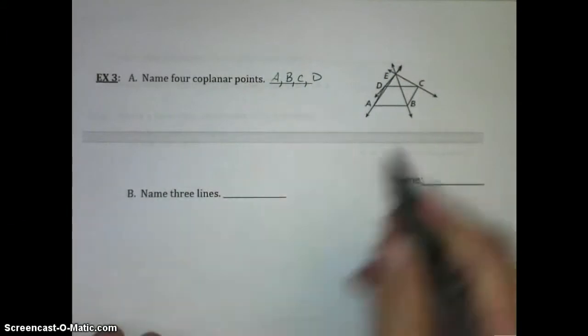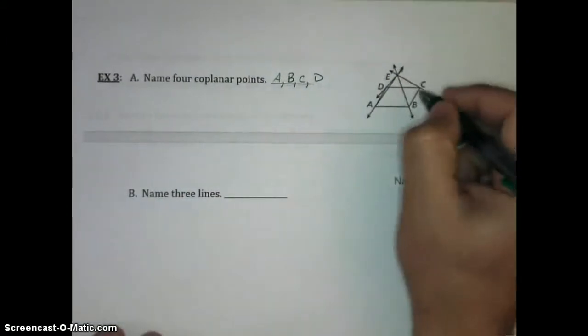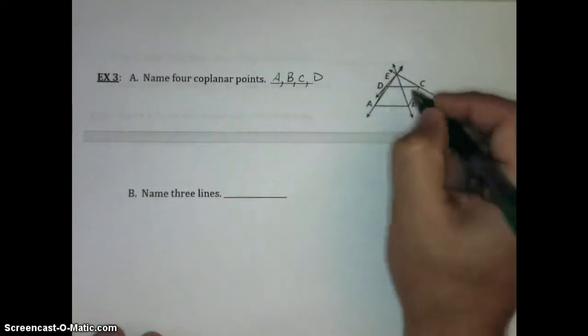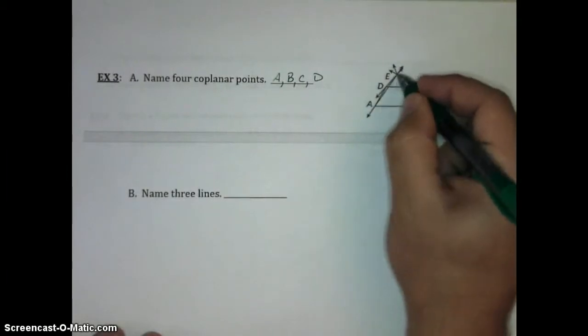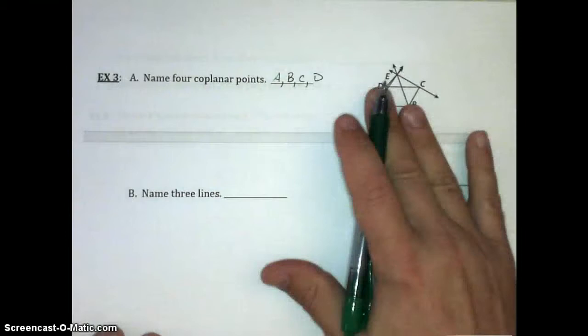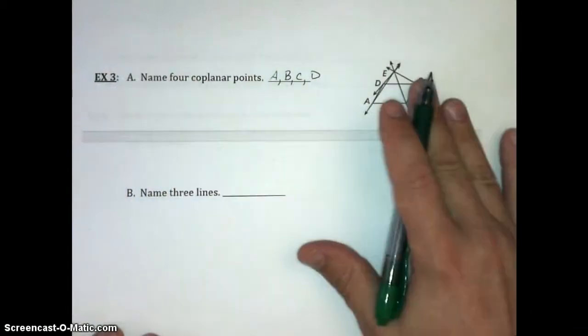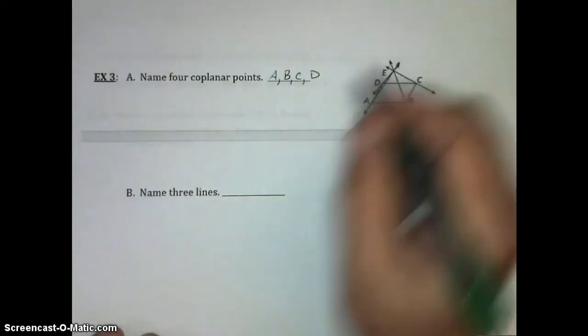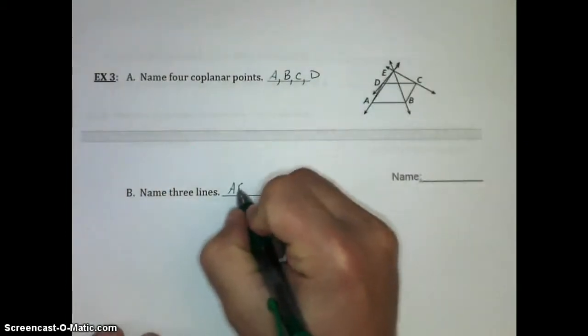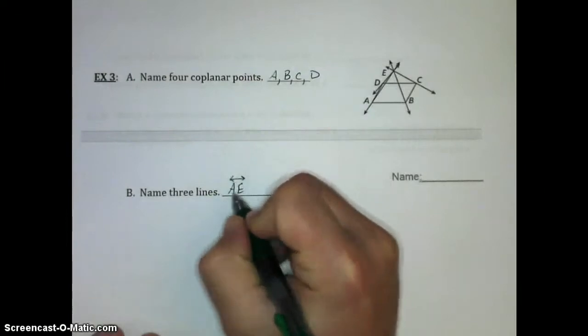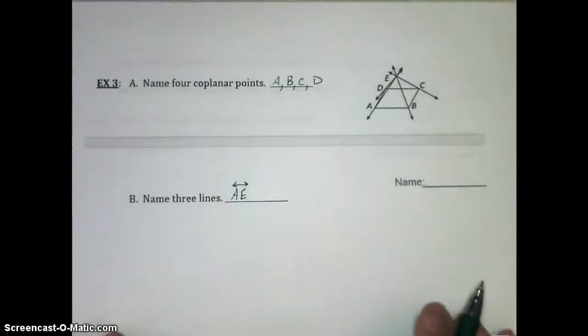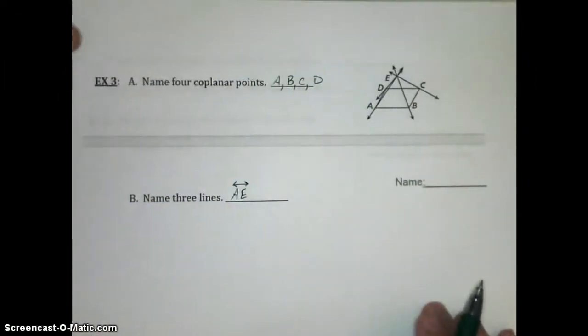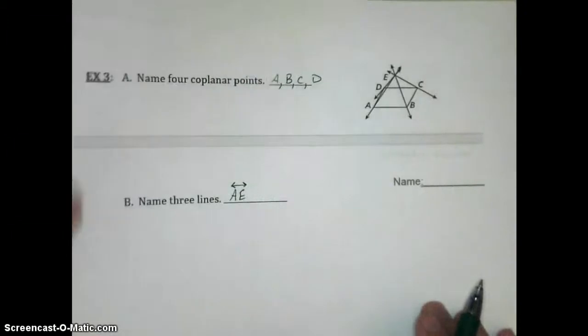Then it says name three lines. There's lots of lines we could use, but the lines have the arrows. So I'm going to pick A, E. Imagine E is some point up here above the page, and A, B, C is the page itself down here. So A, E is the line I'm going to use as my example. We could also use many other ones there. Why don't you think of some more?